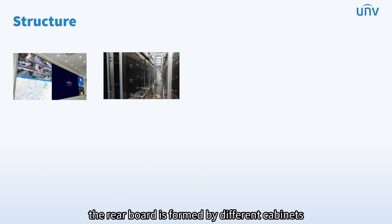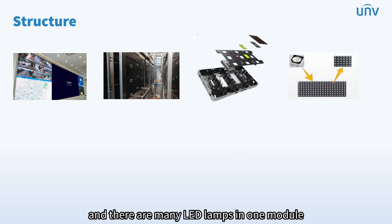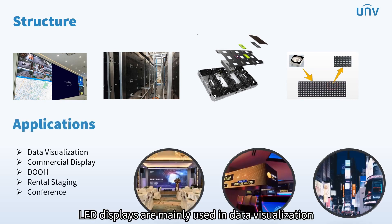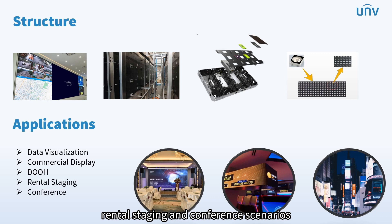For example, here we can see the structure of LED screen. The rear board is formed by different cabinets. A cabinet is composed of different parts we just mentioned, such as module, and there are many LED lamps in one module. At present, LED displays are mainly used in data visualization, commercial display, outdoor advertising, rental staging, and conference scenarios.